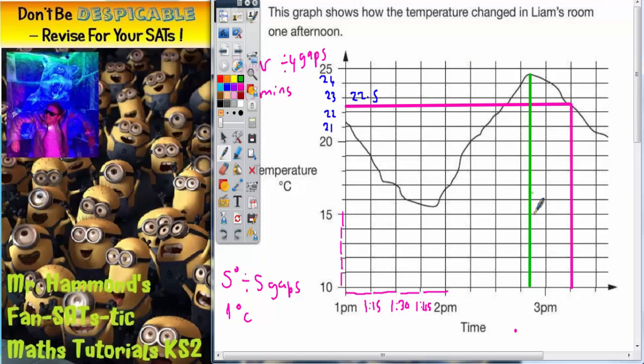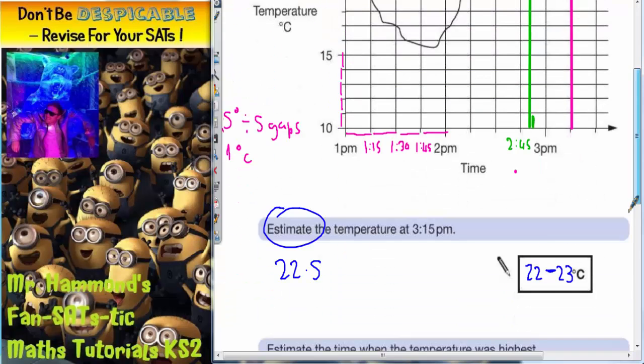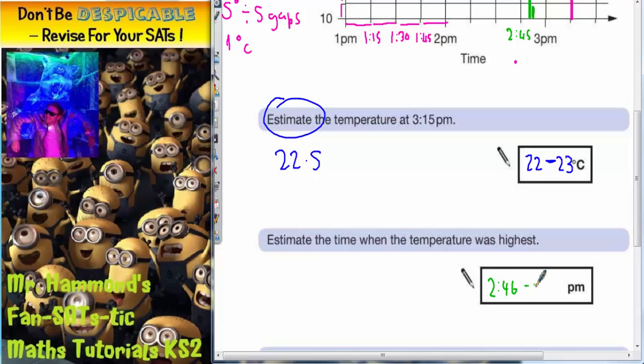So if that's the highest temperature, estimate the time. Well, every gap is worth 15 minutes. So if this is 3 p.m., this would have been 2:45. So you can see it's between 2:45 and 3 p.m. They wouldn't accept 2:45 because it's not on this line. So it's going to be bigger than 2:45 and it's less than halfway between 2:45 and 3 p.m. Halfway between those two would be 7.5 minutes. So 2:52, 2:53 p.m. So they'll probably let you have anything from 2:46 to 2:52 p.m., and any number in between there. So if you had 2:50 p.m., that would be correct.